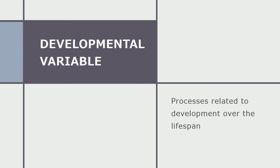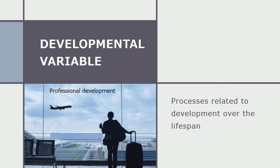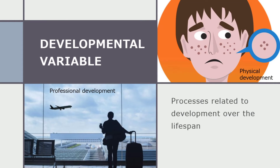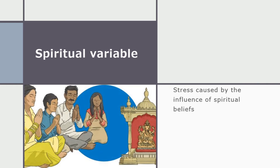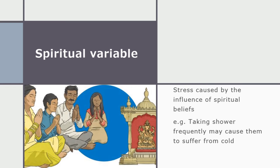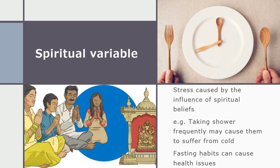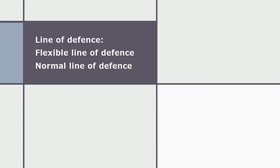The developmental variable refers to processes related to development over the lifespan. For example, getting promoted to a new job and going abroad involves many adjustments — new role, new place — causing several stresses. It may also be physical, such as going through puberty. The spiritual variable refers to the influence of spiritual beliefs. For instance, a family with a habit of bathing before every major daily routine may frequently suffer from cold, or fasting habits may cause health issues.